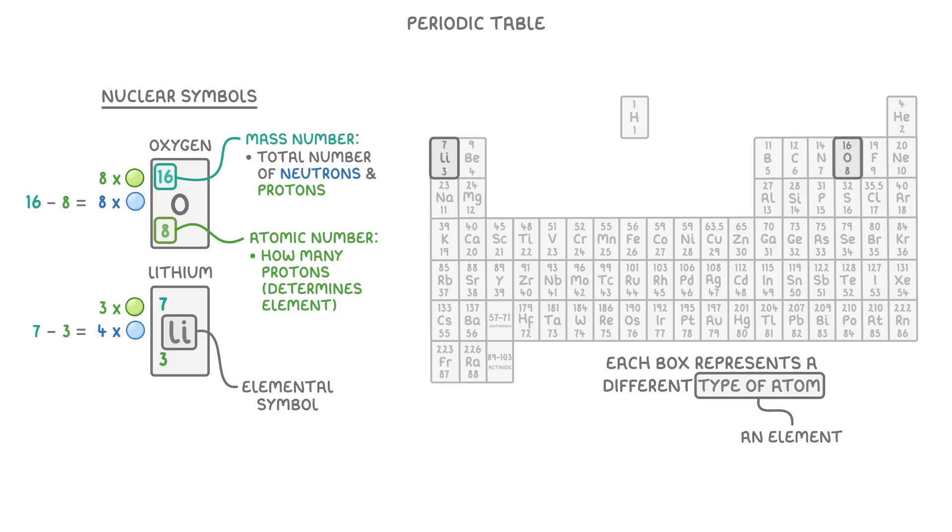As we said at the beginning of the video, the number of protons and electrons in an atom is always the same. So the atomic number also tells us how many electrons the atom has, which means oxygen would have 8 electrons and lithium would have 3.